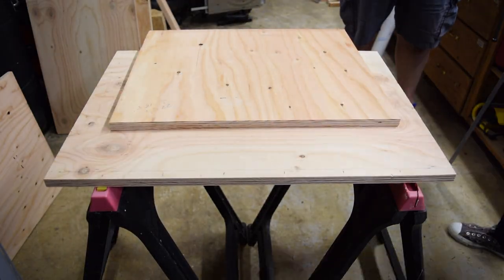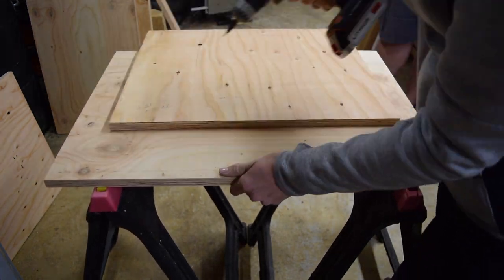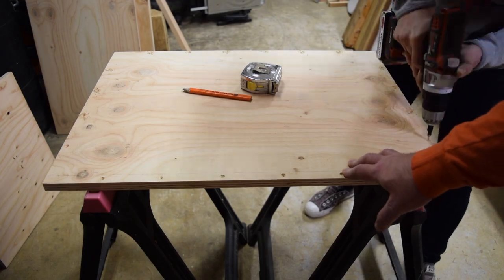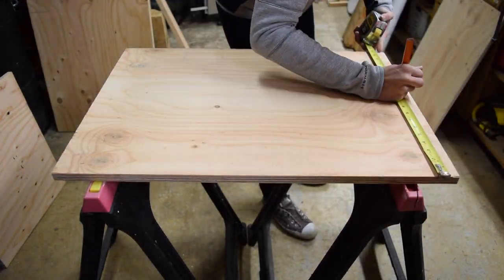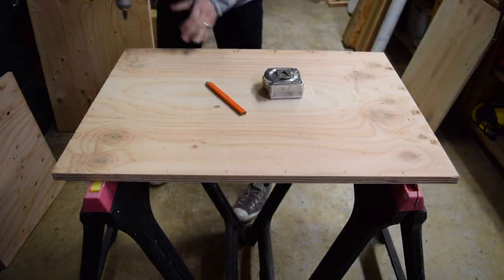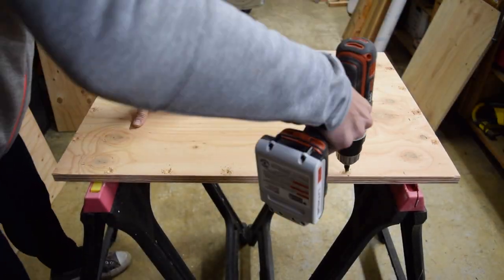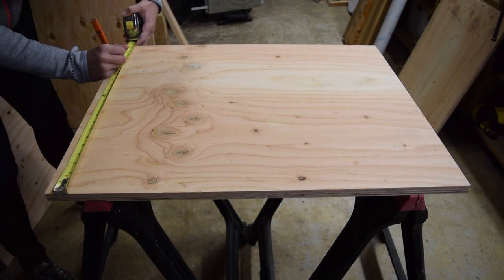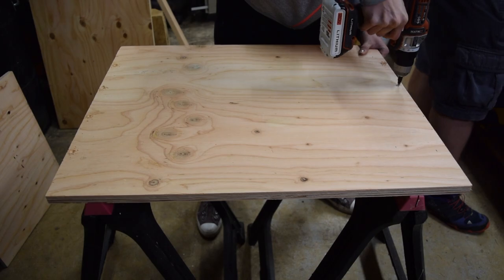Once we had all of the sides cut, we pre-drilled and countersunk holes for the two-inch wood screws that will be used. The plans call for screws every four or four and a half inches depending on the side, so we used a lot.